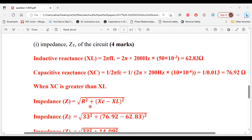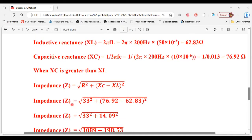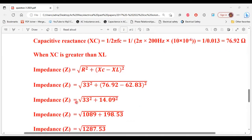Now that will dictate the formula. So seeing that XC is greater than XL, impedance is equal to square root of R² plus (XC - XL)². Which will give us square root of 33² plus (76.92 - 62.83)², that will give us the square root of 1089 plus 198.5.